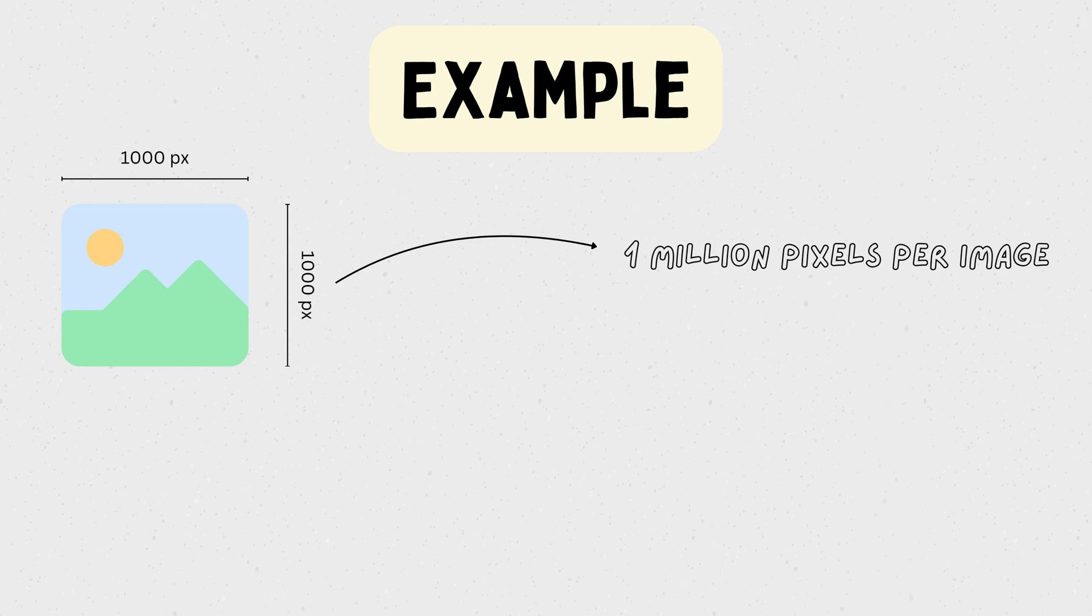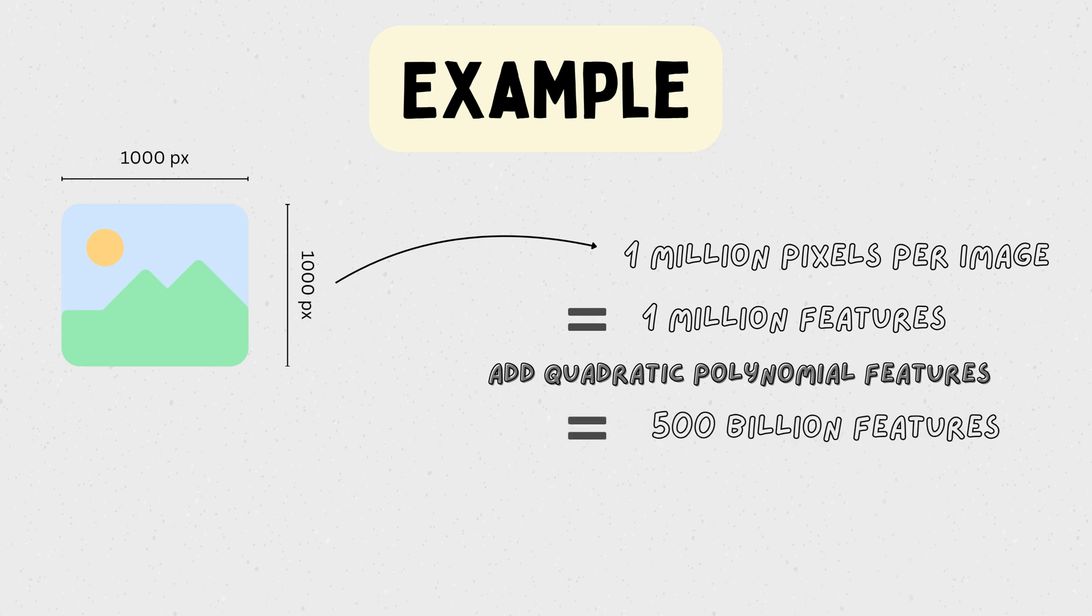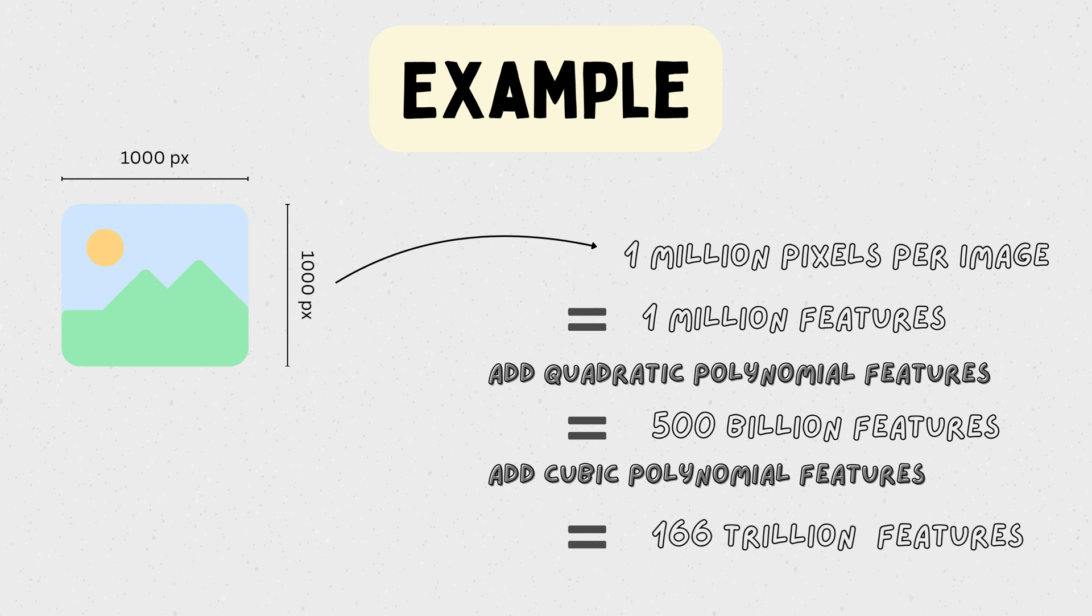Now if you add quadratic polynomial features, you go from one million features to approximately 500 billion features. With cubic polynomial features, this number skyrockets to over 166 trillion features. Handling this many features is not only computationally expensive but also impractical.